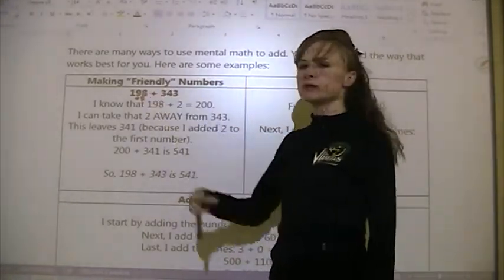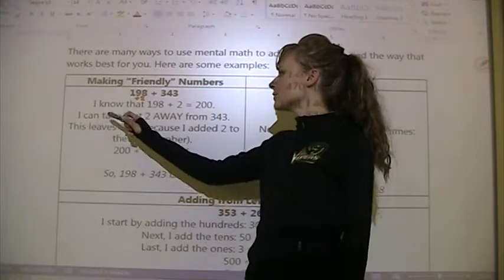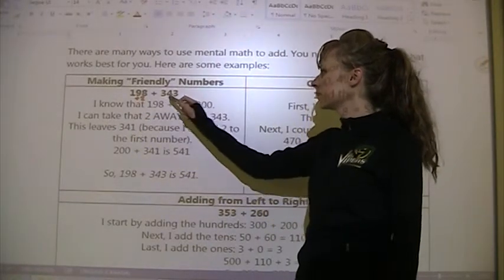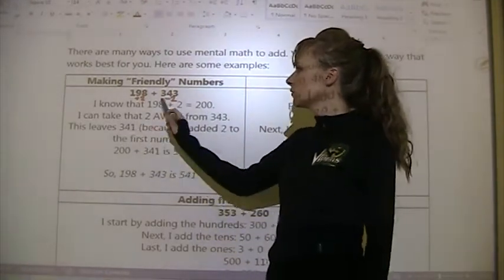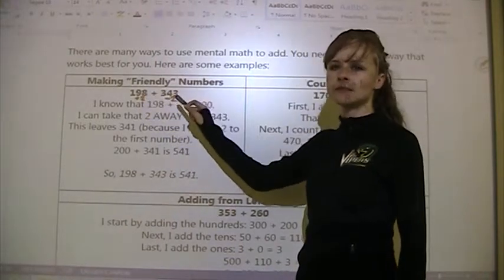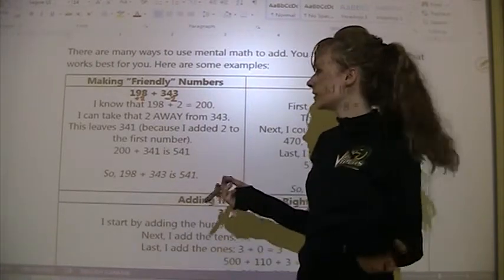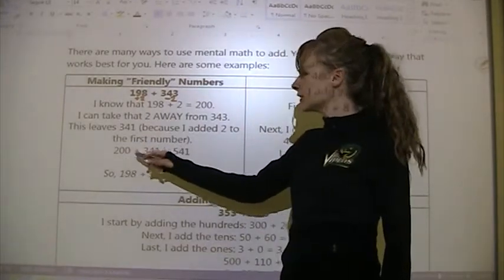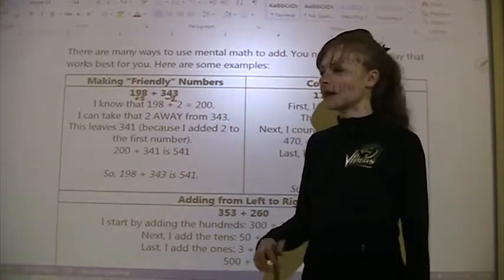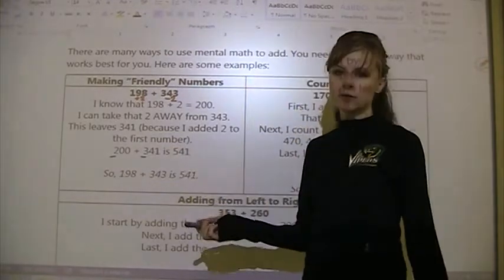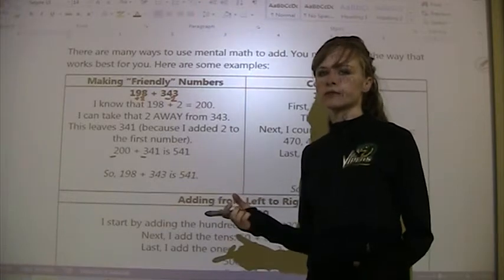200 is such an easy number to add because it just adds 2 to the hundreds digit. So I take 2 away from 343, which leaves 341 — because if I add 2 to one side, I take 2 from the other to balance it out. Now I have 200 plus 341, which is much easier: just add 2 to the 3 and keep the 41, giving 541.